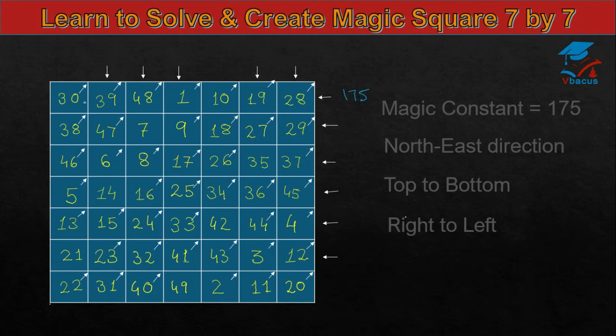And diagonally, 30, 47, 8, 25, 42, 3, 20. This will also become 175. If you add this 48, 7, 8, 16, 24, 32, plus 40, again, it will become 175.